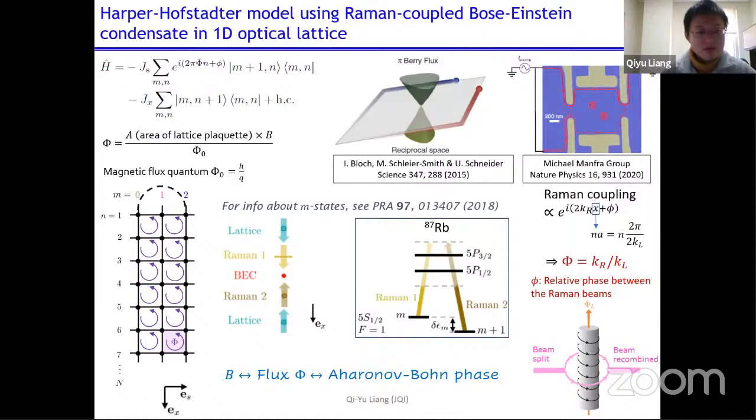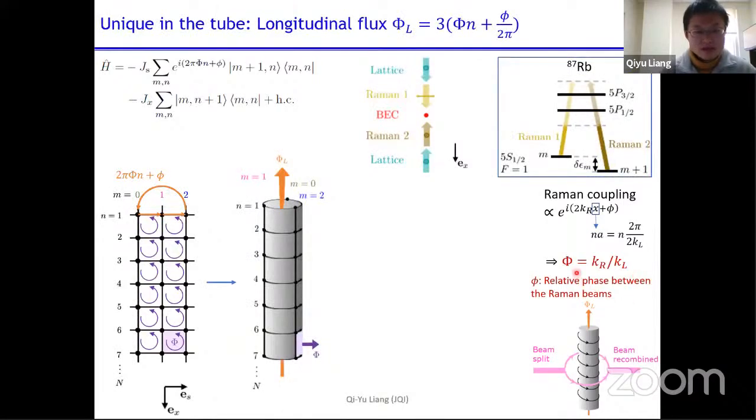So because we are using Raman coupling for this short dimension, there's nothing preventing us from connecting m equals zero to m equals two. And that way you get the tube. So originally on the planar geometry, the little phase phi here, this relative phase between the two Raman beams has no physical consequences. But once you roll it into a tube, you can follow this orange trajectory here. And when you go around like this, then there's a longitudinal flux. And this little phi now make a contribution to the longitudinal flux. And this should have a physical effect as we argued from the Aharonov-Bohm interferometer. And when we talk about sensitivity to the longitudinal flux, we actually mean sensitivity to this little phi here.